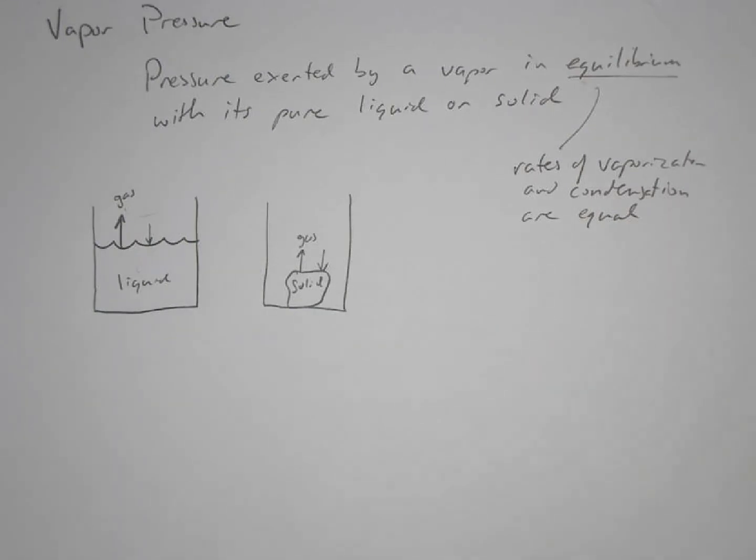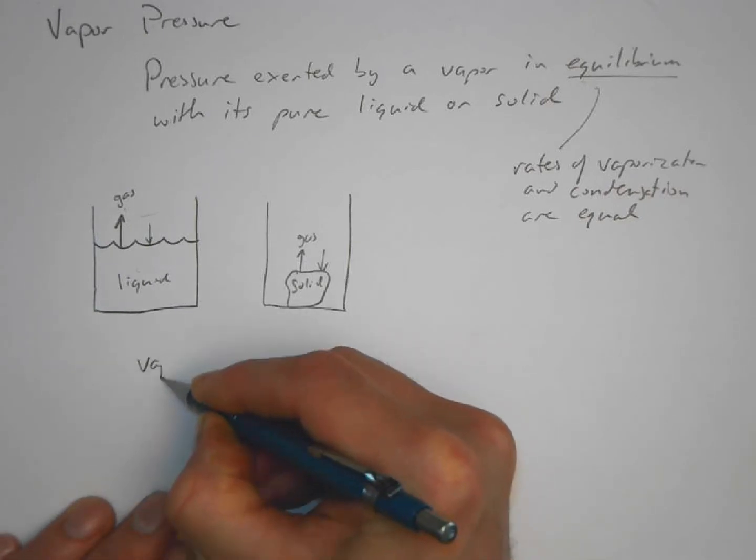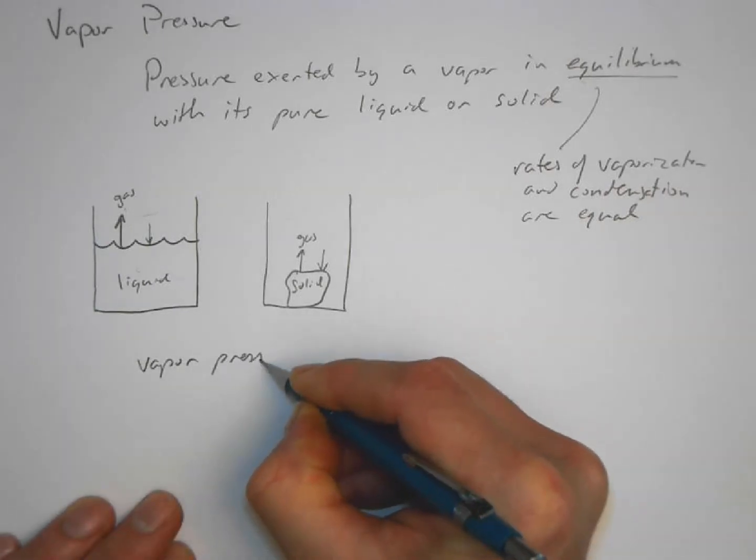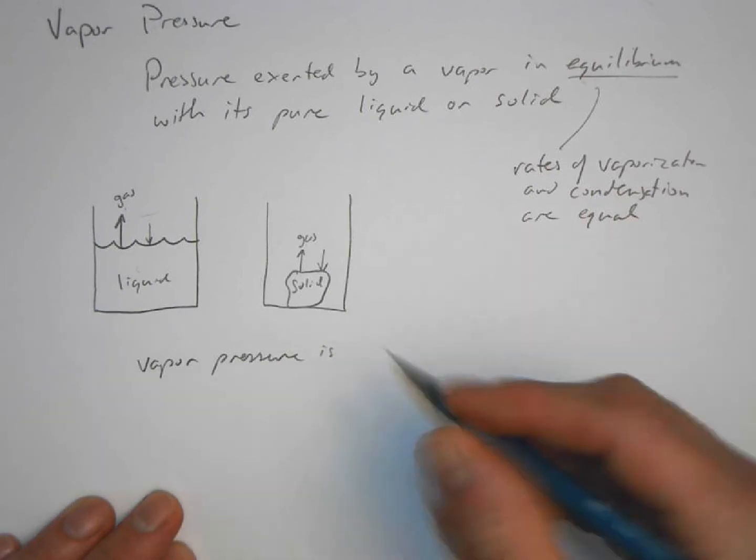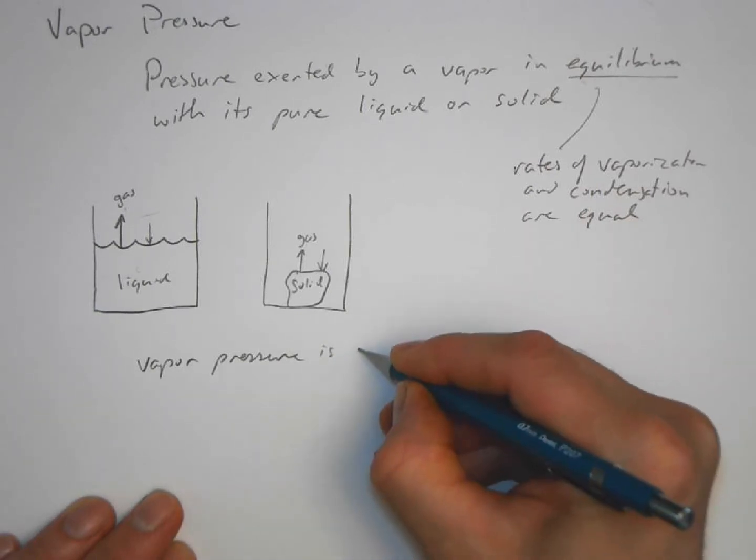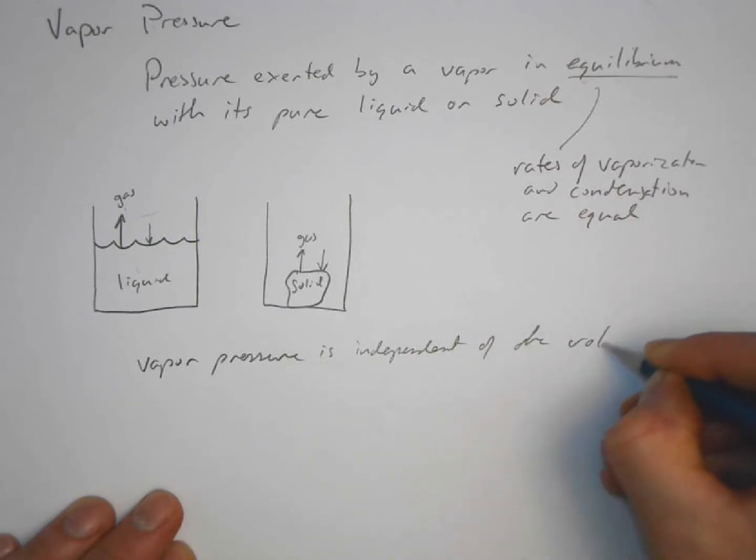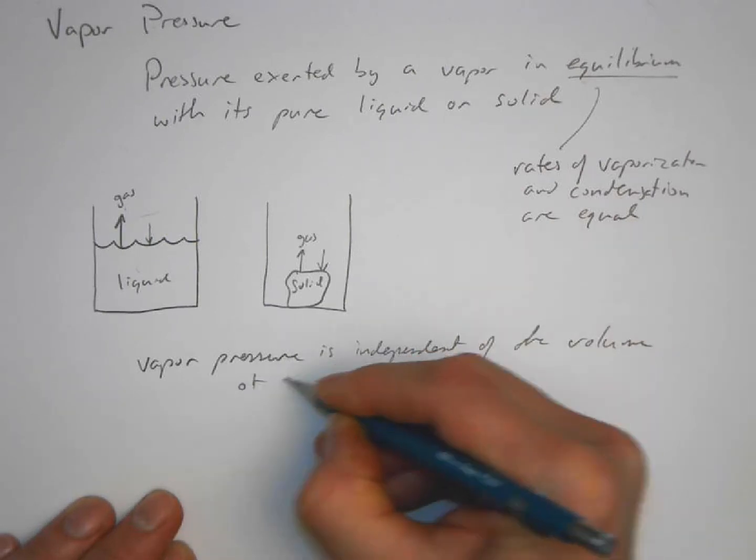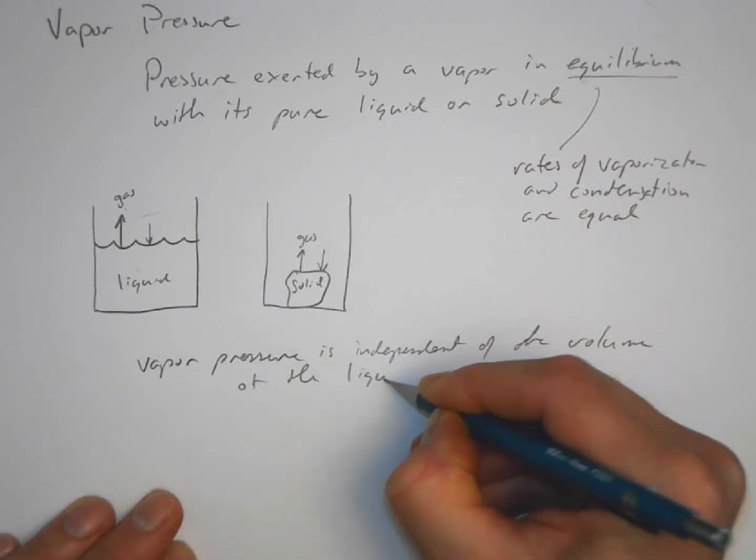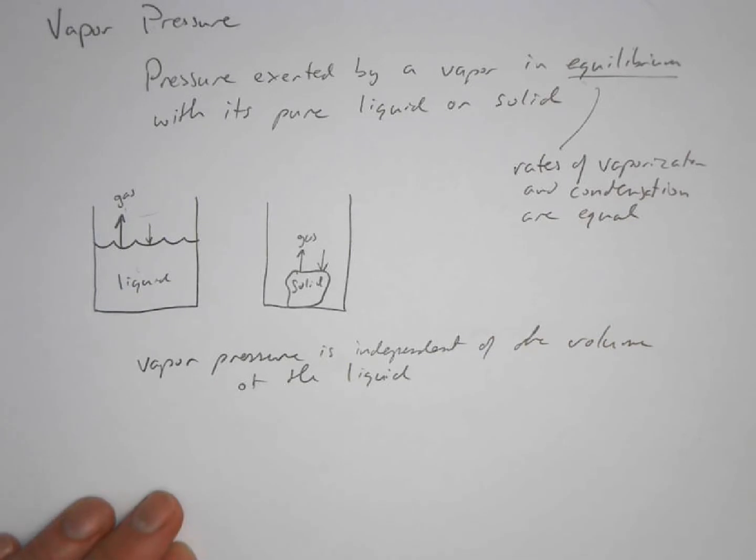It's not so common for a lot of solids that we experience to have a vapor pressure. A few things to note: vapor pressure is independent of the volume of the liquid. So it doesn't matter how much liquid you have in this container; the vapor pressure will still be the same.